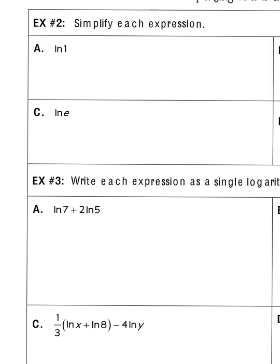We're going to simplify. The natural log of 1: since the base is e, let it equal x, then e to the x equals 1. Any base raised to an exponent of 0 is always 1, so x has to be 0. A shortcut to remember: anytime you have the natural log of 1, it equals 0. That's actually a key point I forgot to mention about our graph previously.